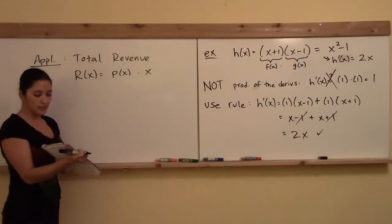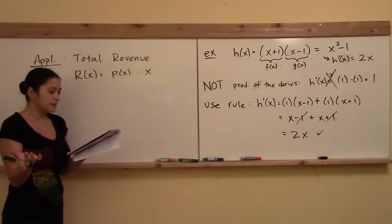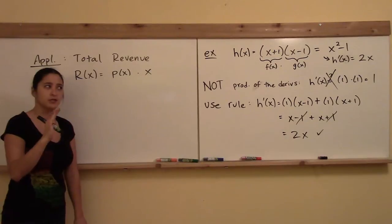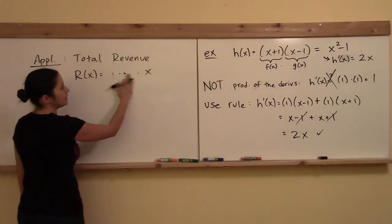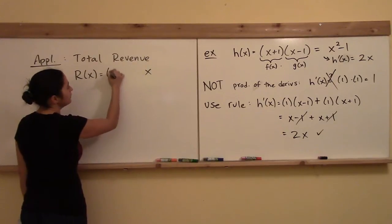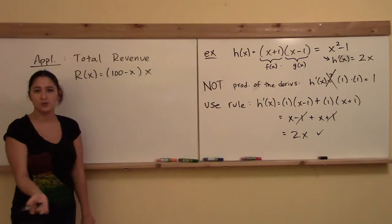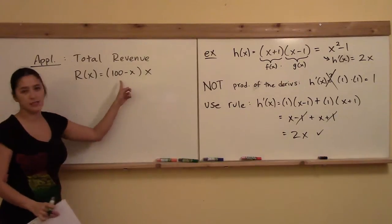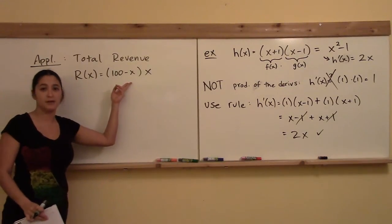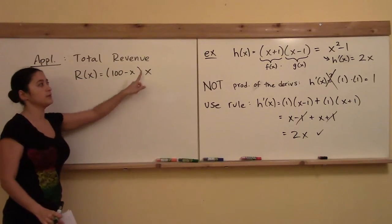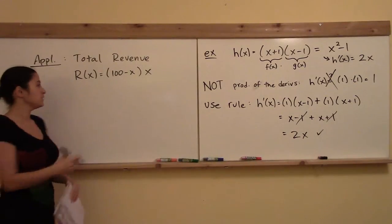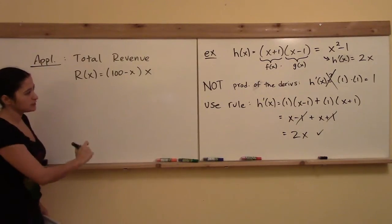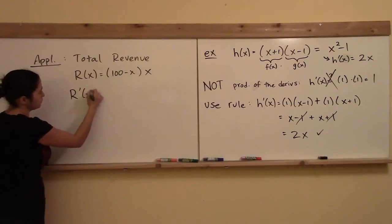Let's say we have a sliding scale price — if you buy more items, I charge you less per item. That means price is not fixed but variable, dependent on number of items sold. So total revenue is the product of a pricing function p of x multiplied by the simple function g of x equal to x. For example, maybe if you buy one item I charge $99, two items $98, three items $97 — a sliding scale. In this case, my price per item is the function 100 minus x.